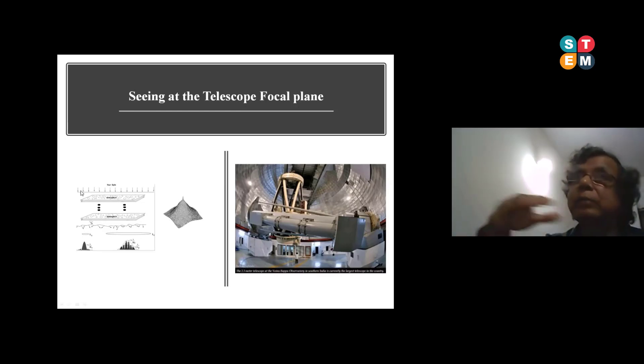What is happening: if we start light above the turbulent cell, it's a plane wavefront. Once it passes through the cells, these are all eddies it forms, and then it disturbs the plane wavefront - it becomes distorted.